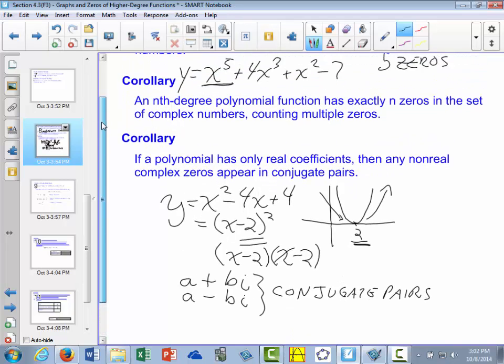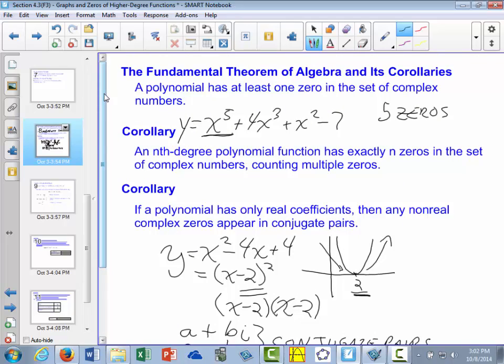So remember, the fundamental theorem of algebra: we have at least one zero for any polynomial, real or complex. And then, for every polynomial, we'll have n solutions for an nth degree polynomial.